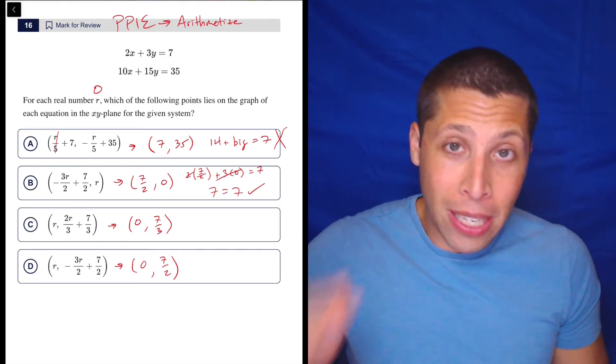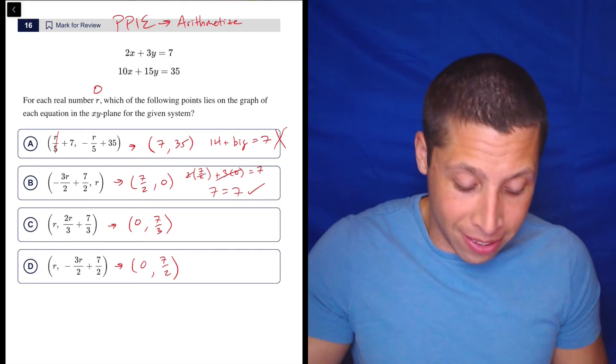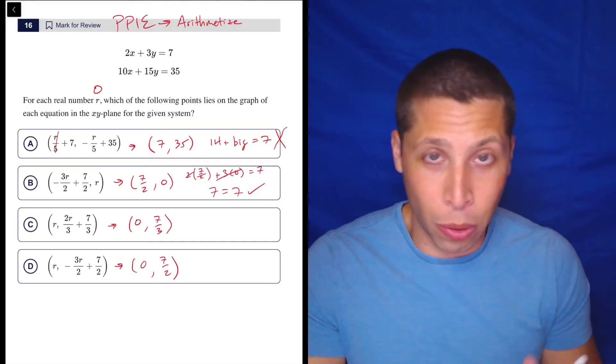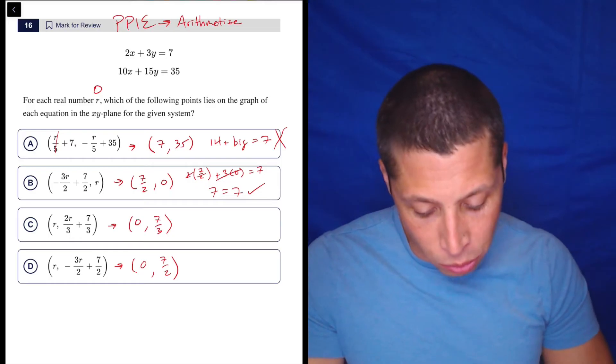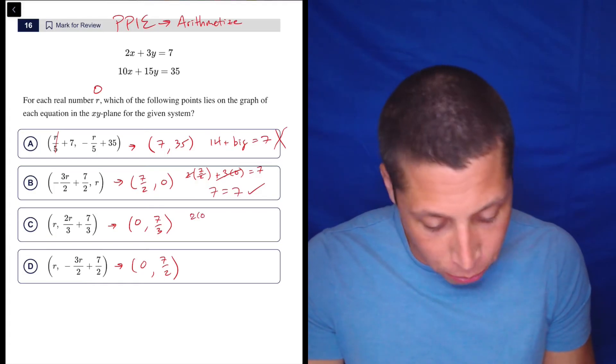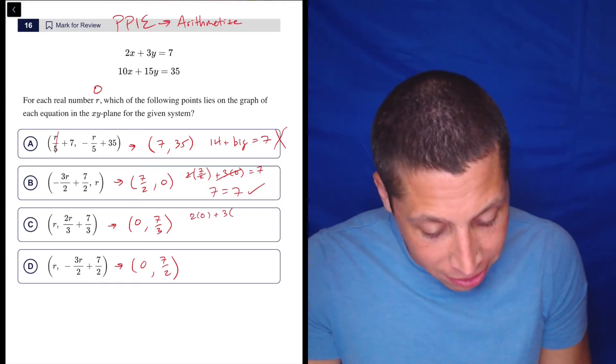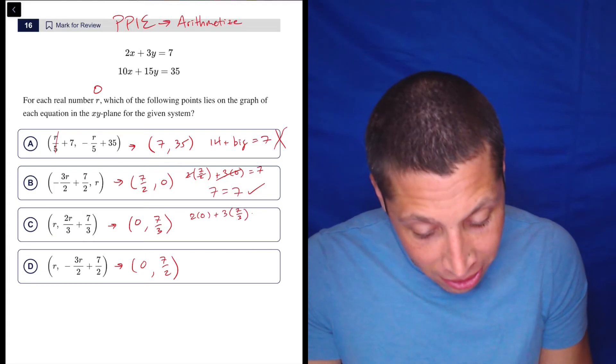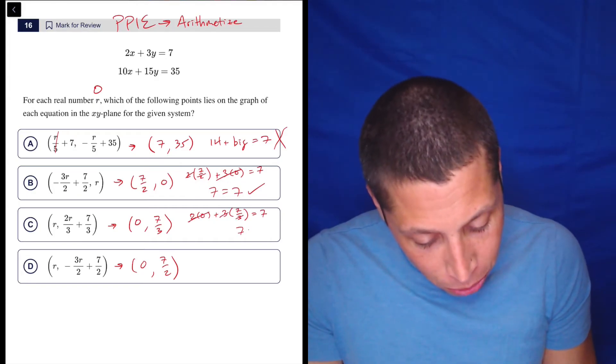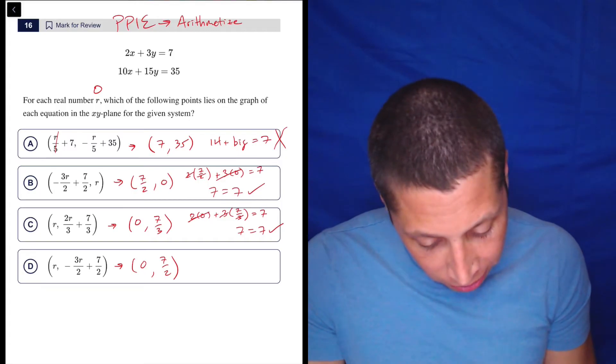Now I'm not going to try the other equation because, well, like I said, it's the same equation. So let's just try the other answer choices and see if any of them work as well. So this one would be zero seven thirds. So that's two times zero plus three times seven thirds equals seven. So unfortunately that works too. That's okay. It still doesn't bother me too much.